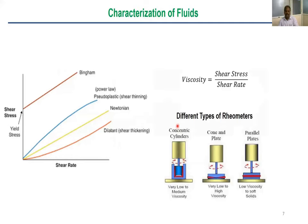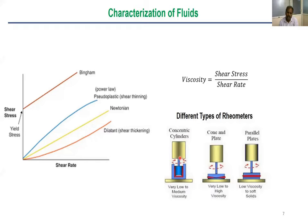To understand what differentiates these fluids, consider shear stress, shear rate, and viscosity — viscosity is the ratio of shear stress to shear rate. Rheometers measure this property. For example, a concentric cylinder rheometer uses a metallic beaker with a spindle inside; the fluid fills the gap and the inner cylinder rotates. Higher torque is required to rotate a high-viscosity fluid, and lower torque for low-viscosity fluids.